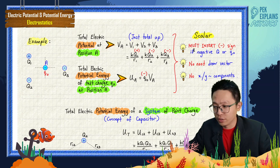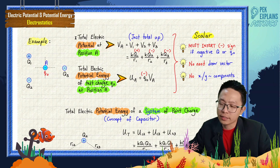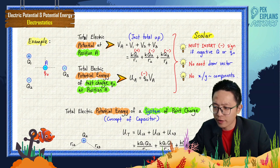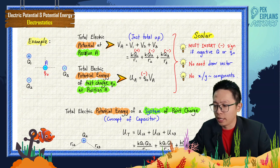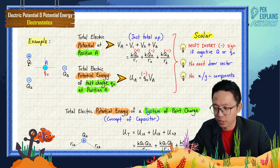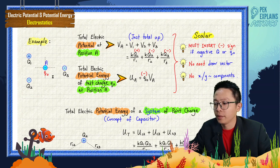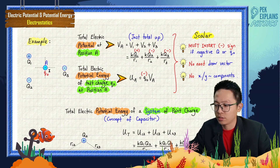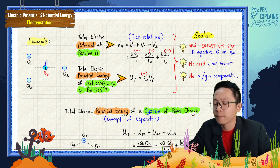Let us continue. Now let us find the total electric potential at position A. Here we have three point charges: Q1, Q2, and Q3. And this is just a test charge, Q0, and this test charge is at position A.